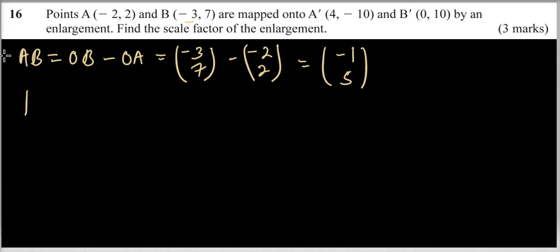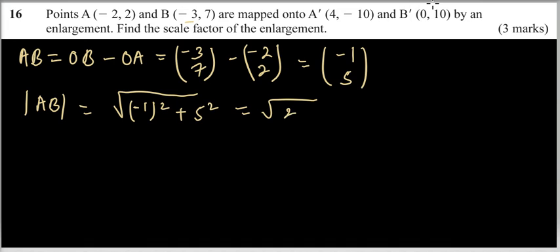To get the magnitude of AB, you'll be able to get the square root of (-1)² plus 5², which is equal to the square root of 26. That is -1 squared is 1, 5 squared is 25. You get the square root of 26.